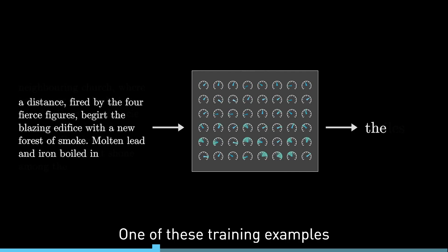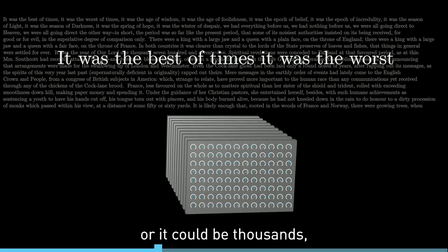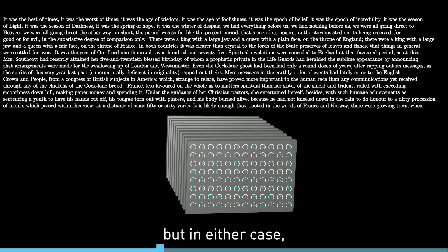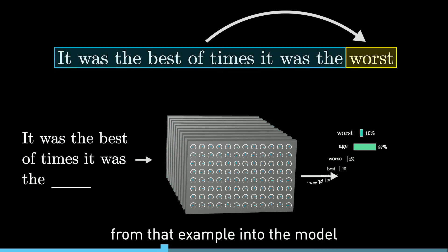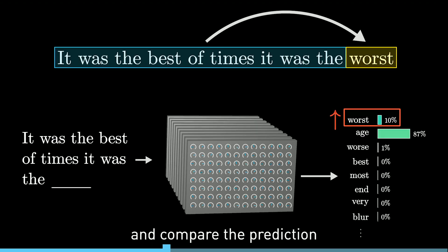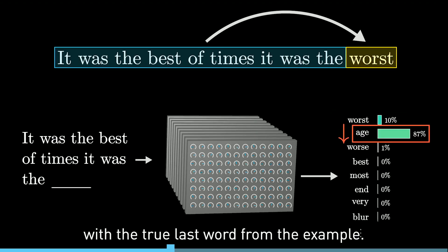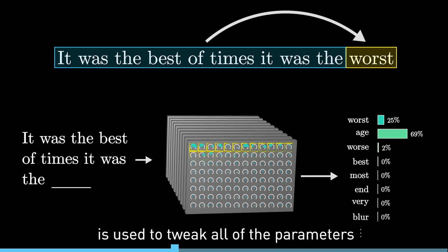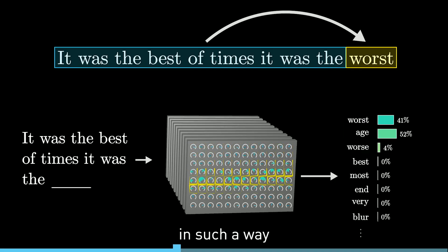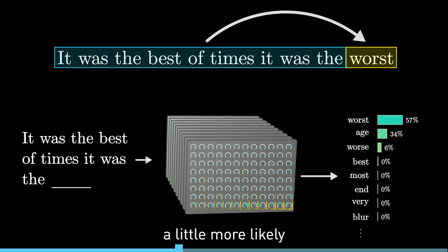One of these training examples could be just a handful of words, or it could be thousands, but in either case the way this works is to pass in all but the last word from that example into the model and compare the prediction that it makes with the true last word from the example. An algorithm called backpropagation is used to tweak all of the parameters in such a way that it makes the model a little more likely to choose the true last word and a little less likely to choose all the others.